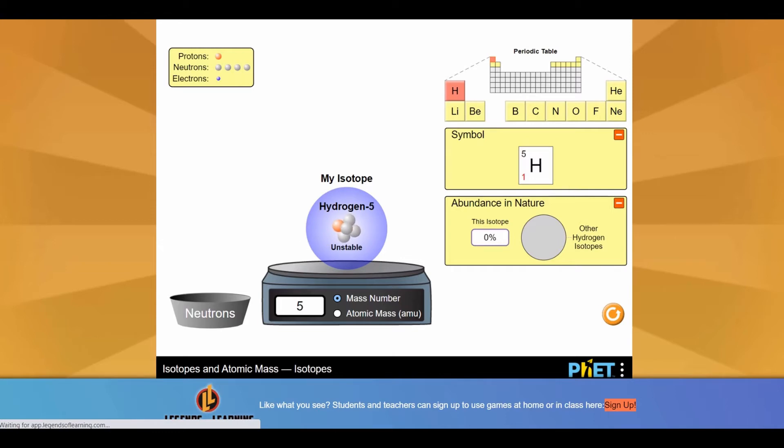When you add neutrons to the molecules, they can become unstable, so you need to use the periodic table symbol which is displayed as well as other information to learn more about that element.